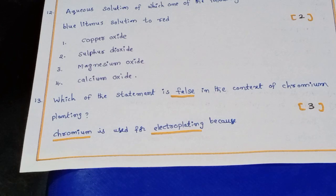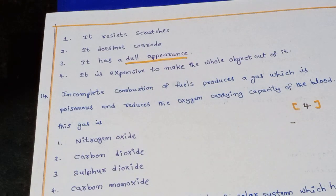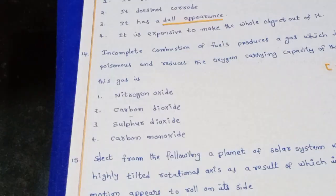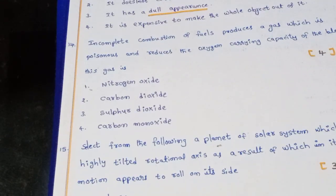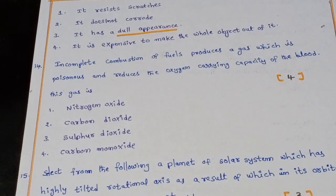Question 13: Which of the following statements is false in the context of chromium plating? Chromium is used for electroplating — the false option is that it has a dull appearance. This is false because chromium has a shiny appearance.